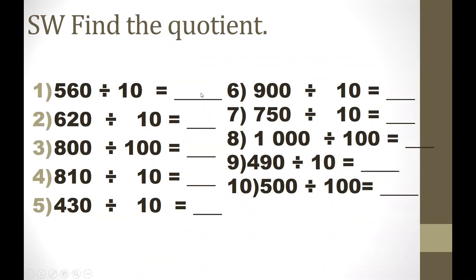Now it's your time to do an activity. We have 10 questions — you can pause the video to answer them. Let's go through the answers. Number 1: 560 divided by 10. Cancel one zero in the divisor and one zero in the dividend. 56 divided by 1 equals 56. Number 2: 620 divided by 10. Cancel one zero each. 62 divided by 1 equals 62.